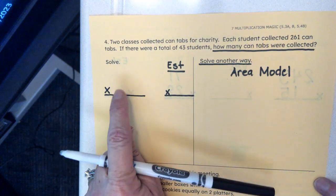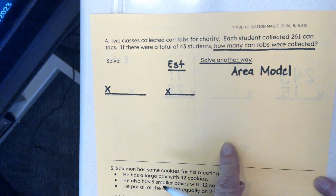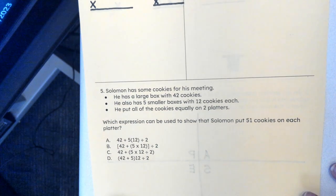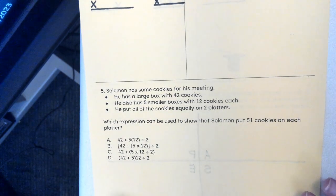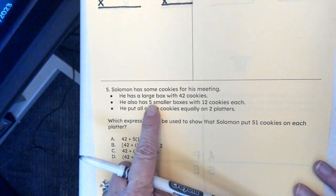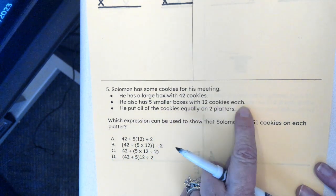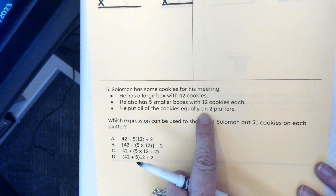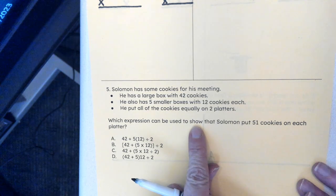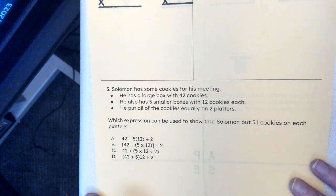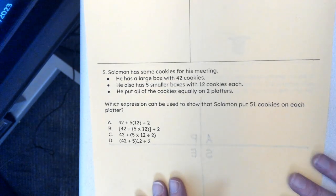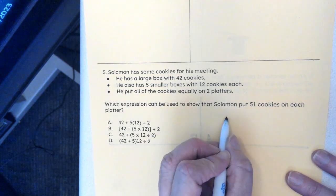So that's going to give us 9, 10, 11 boxes that I'm grading. And then finally, down here for number five, it says: Solomon has some cookies for his meeting. He has a large box with 42 cookies. He has five smaller boxes with 12 cookies each. He put all the cookies equally onto platters. Which expression can be used to show that Solomon put 51 cookies on each platter? So we have our information here.